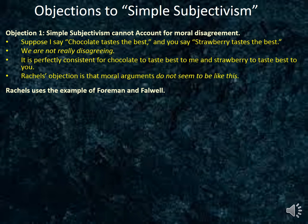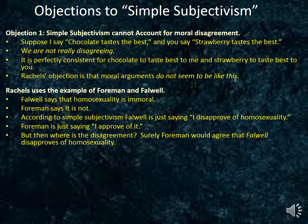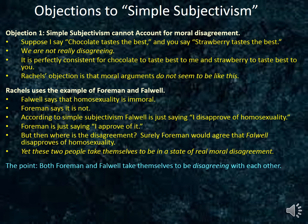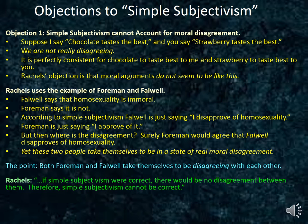Rachels uses the example of Foreman and Falwell. Falwell says that homosexuality is immoral, while Foreman says that it is not. According to simple subjectivism, Falwell is really just saying 'I disapprove of homosexuality,' and Foreman is really just saying 'I approve of it.' But then where is the disagreement? Surely Foreman would agree that Falwell disapproves of homosexuality, yet these two people take themselves to be in disagreement. The point is not about the morality of homosexuality — the point is that both Foreman and Falwell take themselves to be disagreeing with each other. If simple subjectivism were correct, there would be no disagreement between them, and therefore simple subjectivism cannot be correct.